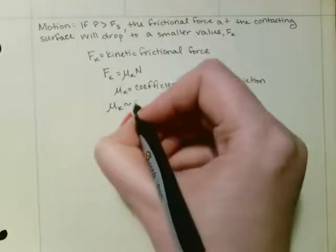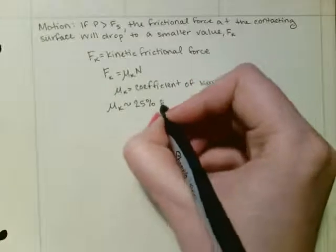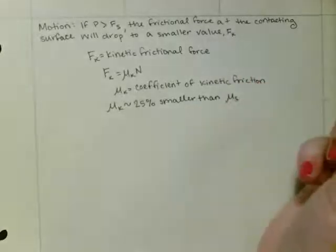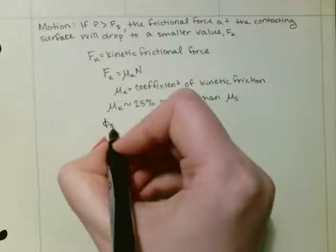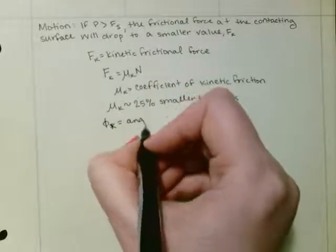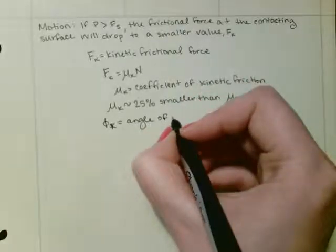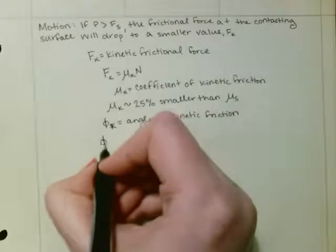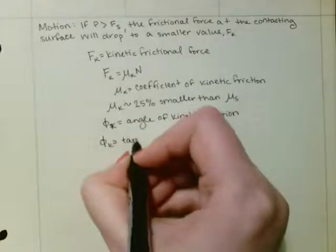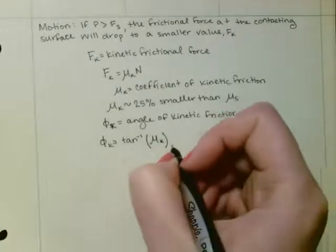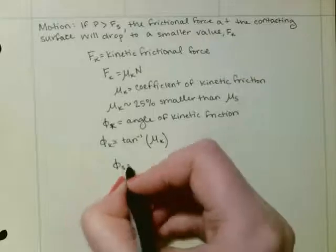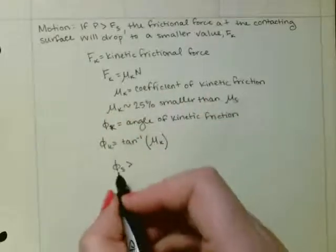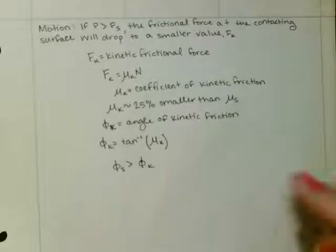Mu k is usually about 20 percent smaller than mu s. There is also an angle of kinetic friction, just like static friction, which equals the inverse tangent of the coefficient of kinetic friction. And as said, your angle of kinetic friction is smaller than your angle of static friction.